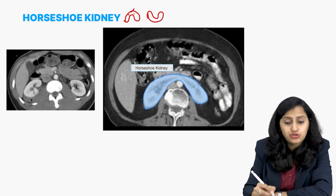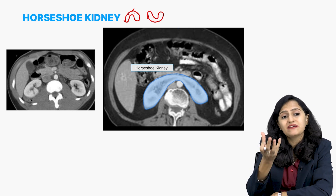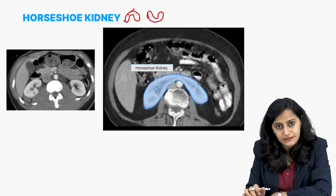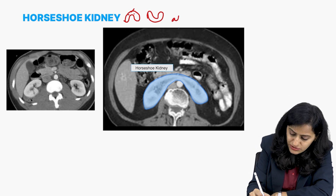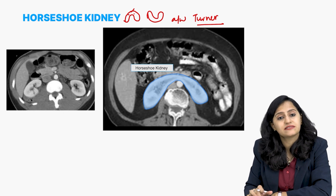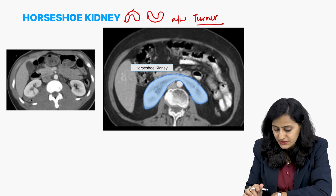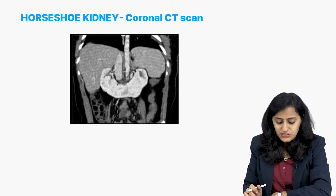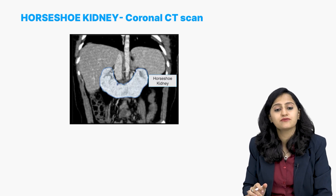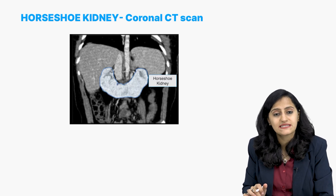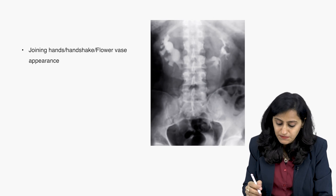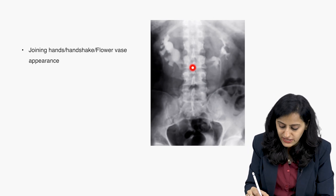Remember, the inferior mesenteric artery is not allowing the ascent of the kidney in horseshoe kidney. Horseshoe kidney is associated with Turner syndrome. Going to the next one — this is another image showing horseshoe kidney on a coronal CT scan.